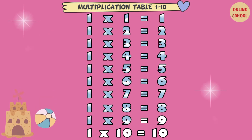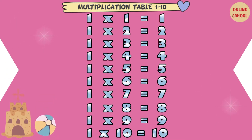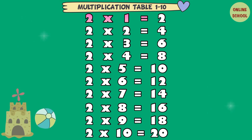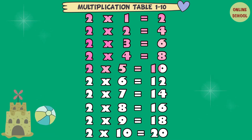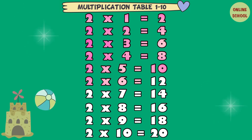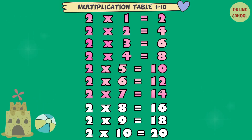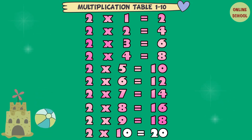1 x 9 equal 9. 1 x 10 equal 10. 2 x 1 equal 2. 2 x 2 equal 4. 2 x 3 equal 6. 2 x 4 equal 8. 2 x 5 equal 10. 2 x 6 equals 12. 2 x 7 equal 14. 2 x 8 equal 16. 2 x 9 equal 18. 2 x 10 equal 20.